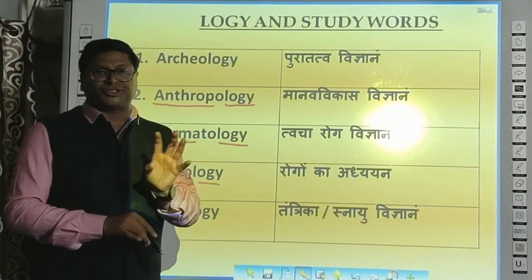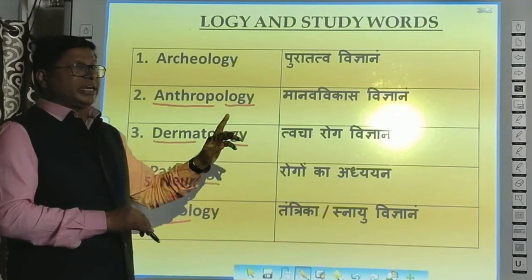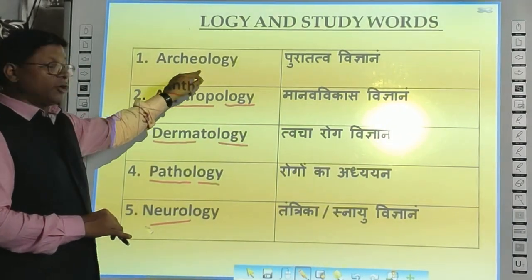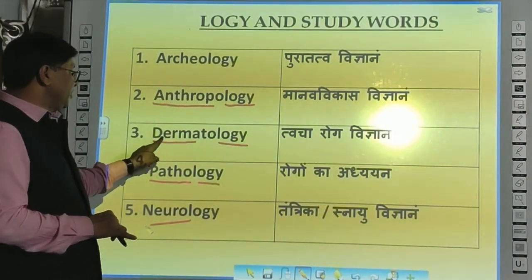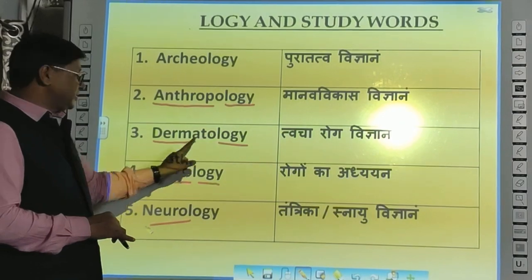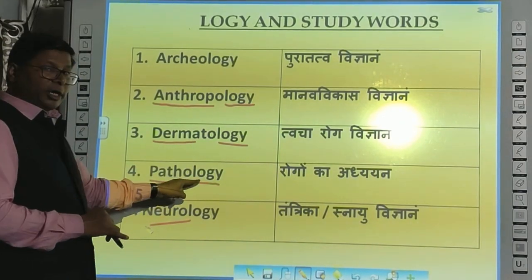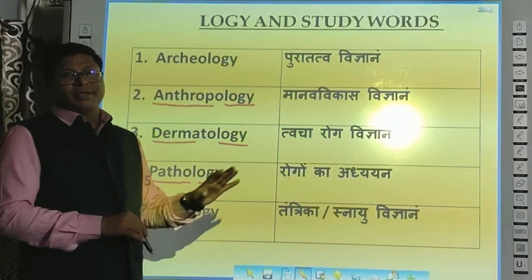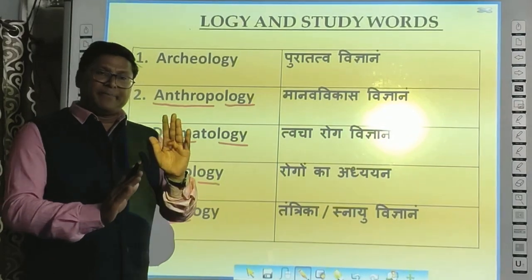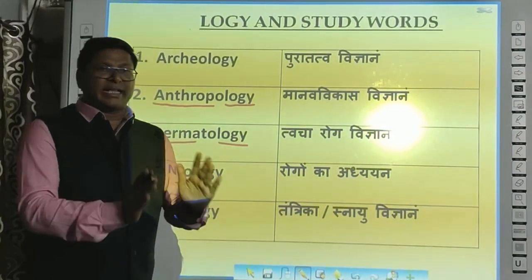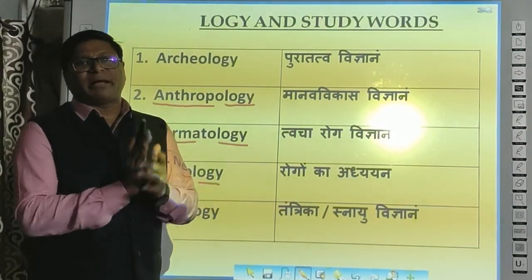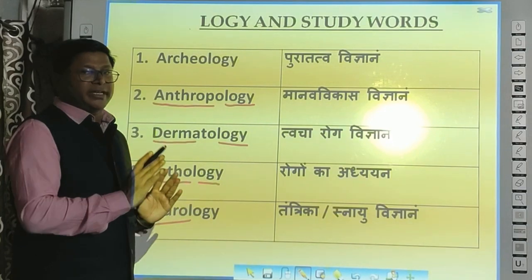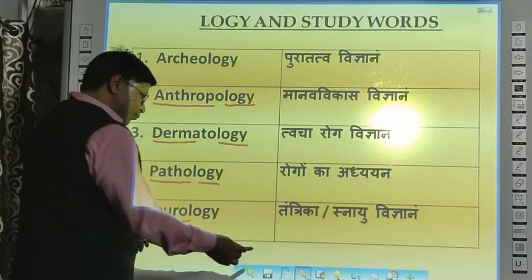So today these five important words — Archaeology, Anthropology, Dermatology, Pathology, and Neurology — are all compulsory for our exams. Now we will see how these are given in exams and what benefit we will get — we can do it just the way they are given in exams.